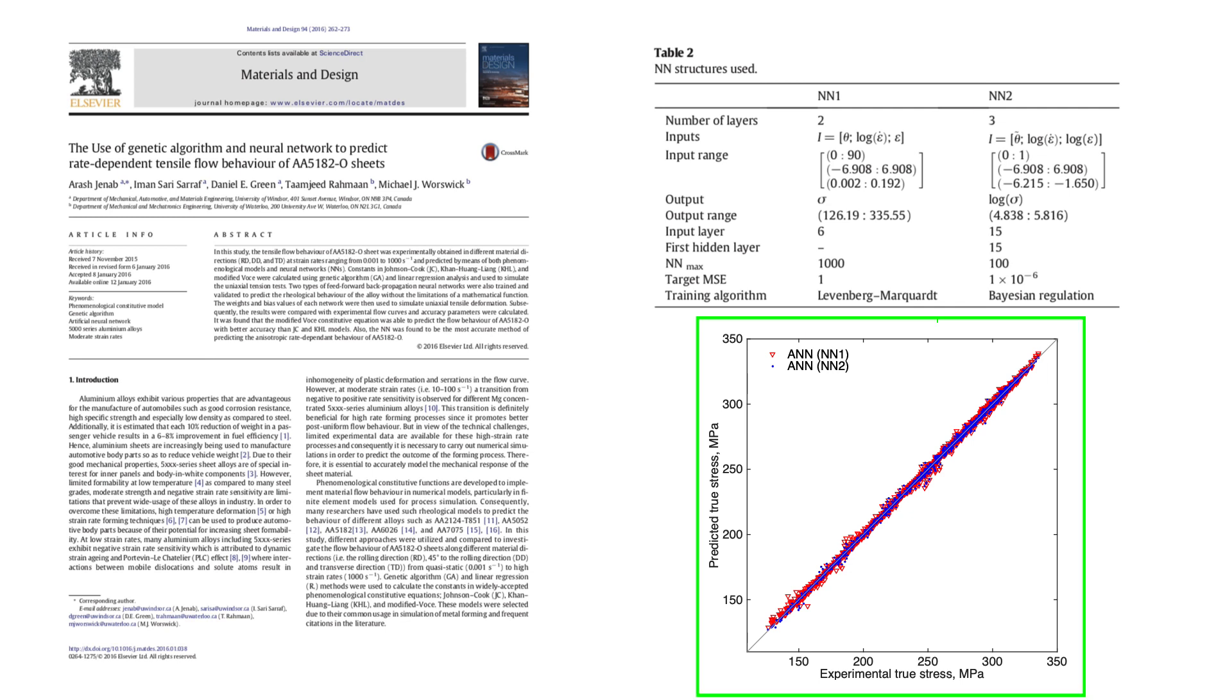And you can see in this plot that the experimental true stress was very close to the predicted one, or vice versa. Especially in case of NN2, the prediction was significantly more accurate than NN1.